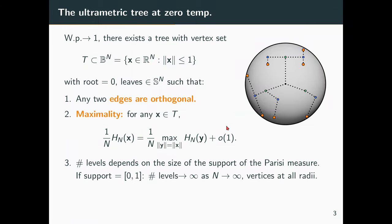But the case I'm interested in where the support is zero one, is the interval zero one. In this case, the number of levels goes to infinity as n goes to infinity. And you'll have vertices at all radii between zero one, at least asymptotically. Okay, so we have this huge structure. We are interested in the leaves of this tree. These are points on the sphere of radius one. We would like to get one of them, for example, that will be a ground state configuration.